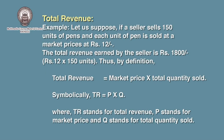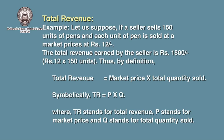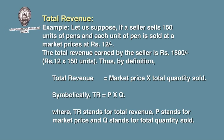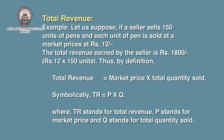For example, if a seller sells 150 units of pens and each unit of pen is sold at a market price of rupees 12, the total revenue earned by the seller is rupees 1800 — that is, rupees 12 multiplied by 150 units. Thus, by definition, total revenue is market price multiplied by total quantity sold. Symbolically, TR = P × Q, where TR stands for total revenue, P stands for market price, and Q stands for total quantity sold.